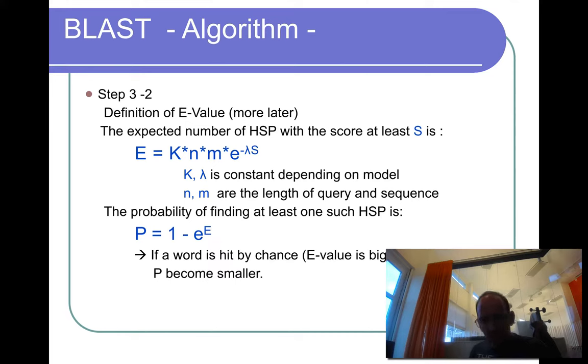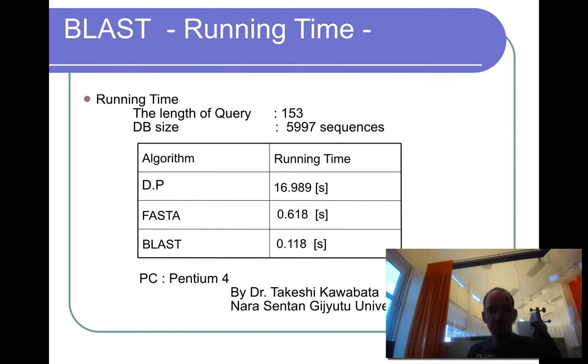The probability to find one such high scoring pair is actually what's called a P-value, which is just one minus E to the power E. But in general, for small numbers, P-values and E-values are basically identical. So all these things make BLAST generally much faster.